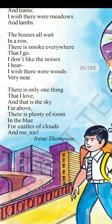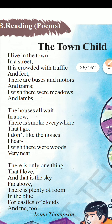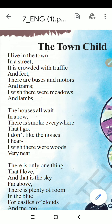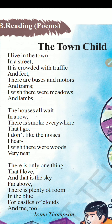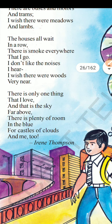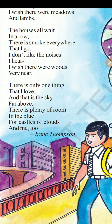The houses all wait in a row. There is smoke everywhere that I go. I don't like the noises I hear. I wish there were woods very near. You can also notice the rhyme scheme here — street, feet, trams, lamps; then row, go, hear, near — a very beautiful rhyming pattern.